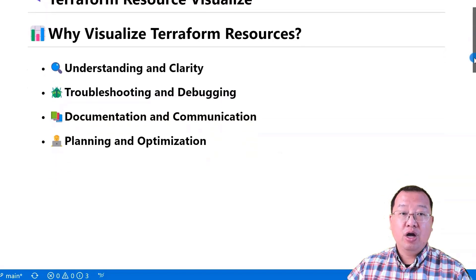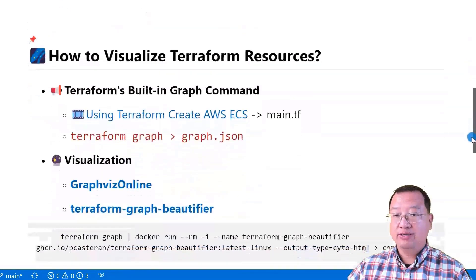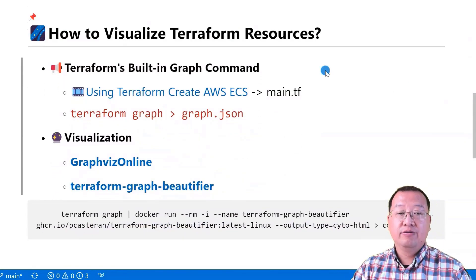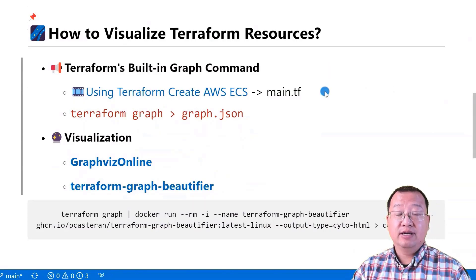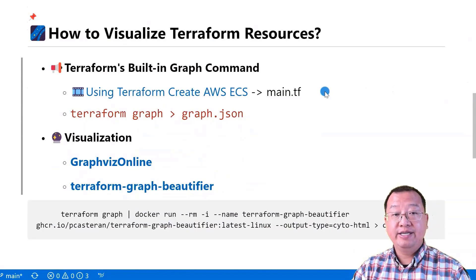Now let's dive into how to visualize Terraform resources. We only need two steps. First step: use the Terraform graph command to generate JSON format data. The command goes through all .tf files in the current folder and generates data that includes relationships and dependencies between your defined resources.